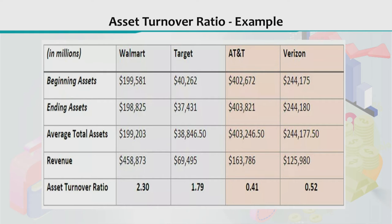If we calculate the average of the beginning and ending assets, and then consider the revenues for all four companies, we divide revenues by average total assets. For Walmart, the asset turnover ratio turns out to be 2.30. The Target value is 1.79, AT&T's value is 0.41, and Verizon's value is 0.52.